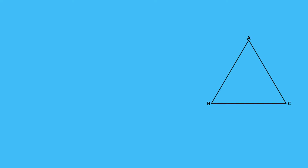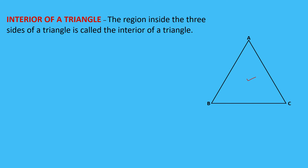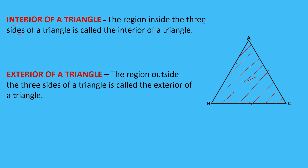Now let's discuss the different regions of a triangle. Looking at triangle ABC, first is the interior: the region inside the three sides of a triangle is called the interior of the triangle. The shaded portion inside sides AB, BC, and CA is the interior. The next region is the exterior: the region outside the three sides of a triangle is called the exterior.